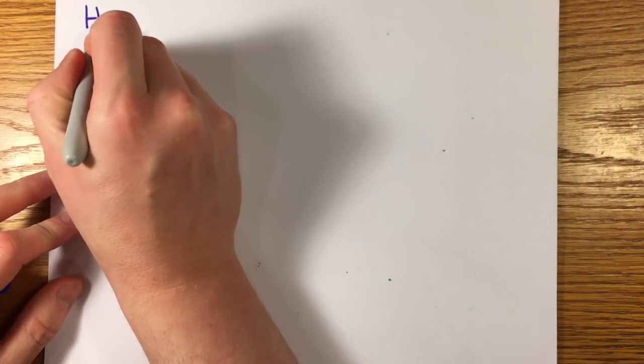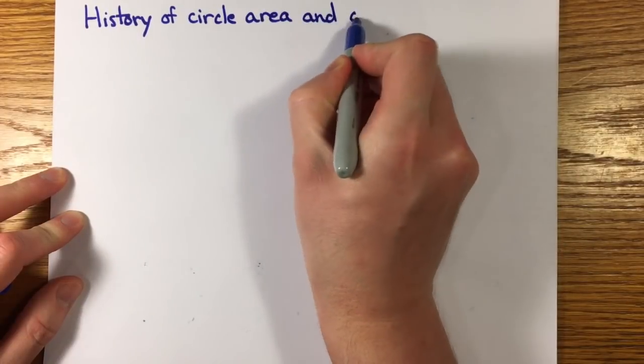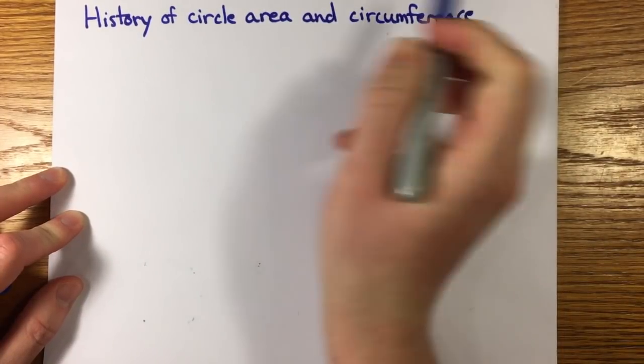I want to give some history. You have to realize this is a hard problem. People thought about how to measure the area and circumference of a circle for at least 2,000 years before the problem was solved.